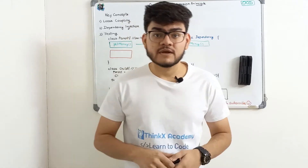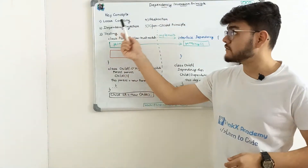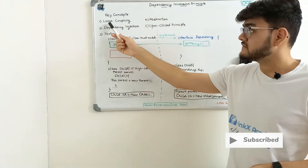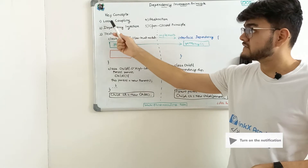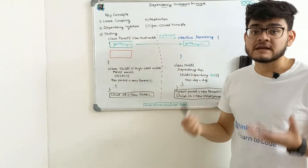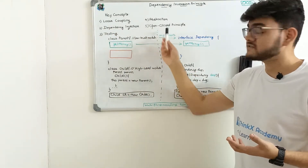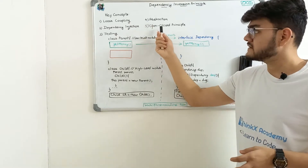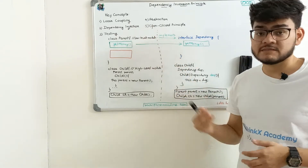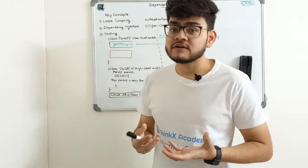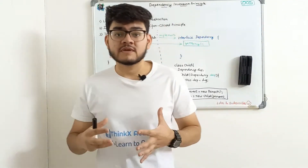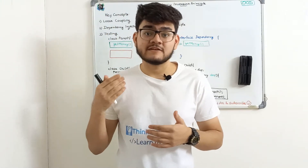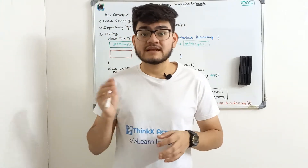First of all, we're going to study five key important points of the Dependency Inversion Principle. These five key concepts are loose coupling, dependency injection, testing, abstraction, and the open-close principle. We have already studied some of these in the previous principles. In this video, we are going to make sure how these principles help us implement the Dependency Inversion Principle.